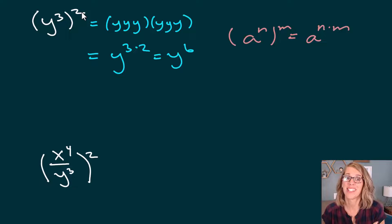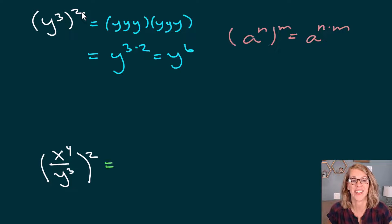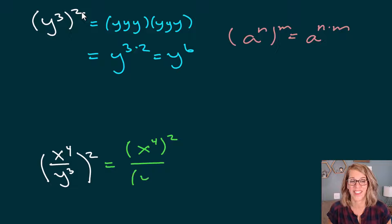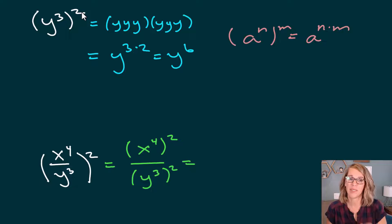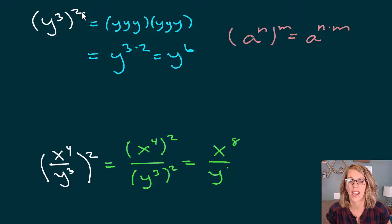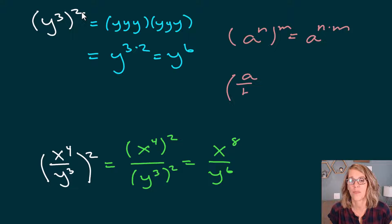This next one is really similar. I've got that power of two, and I can apply it both to the numerator and to the denominator. So I've got x to the fourth all to the second power, and then y cubed all to the second power. I multiply those exponents together and I have x to the eighth over y to the sixth. So this property says that a over b to the nth power is equal to a to the n over b to the n.